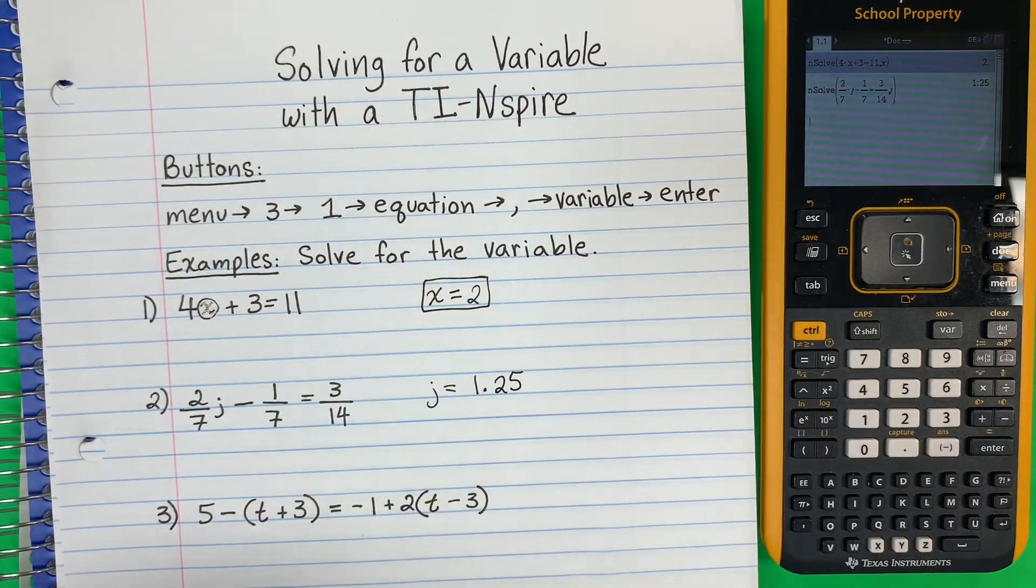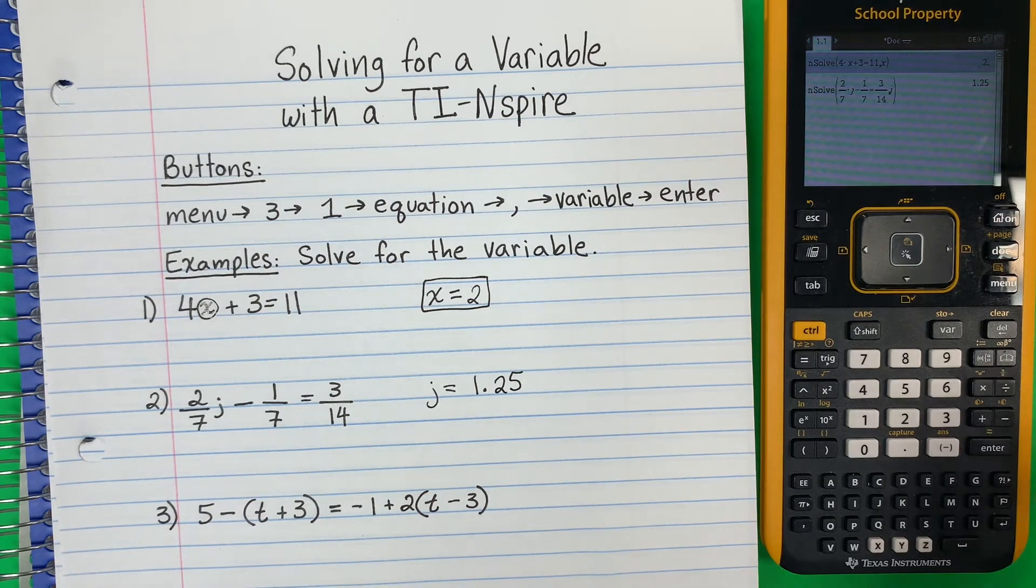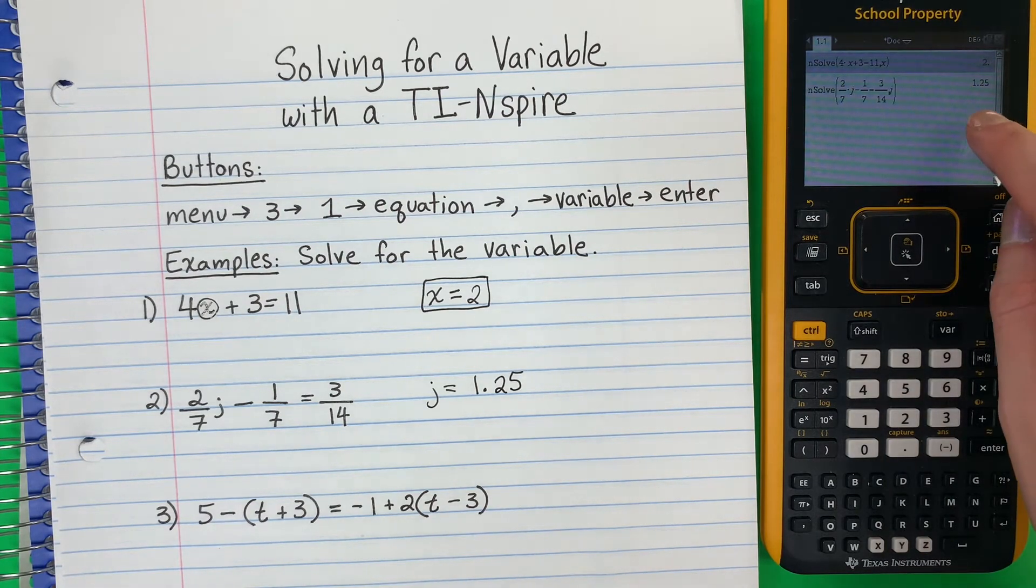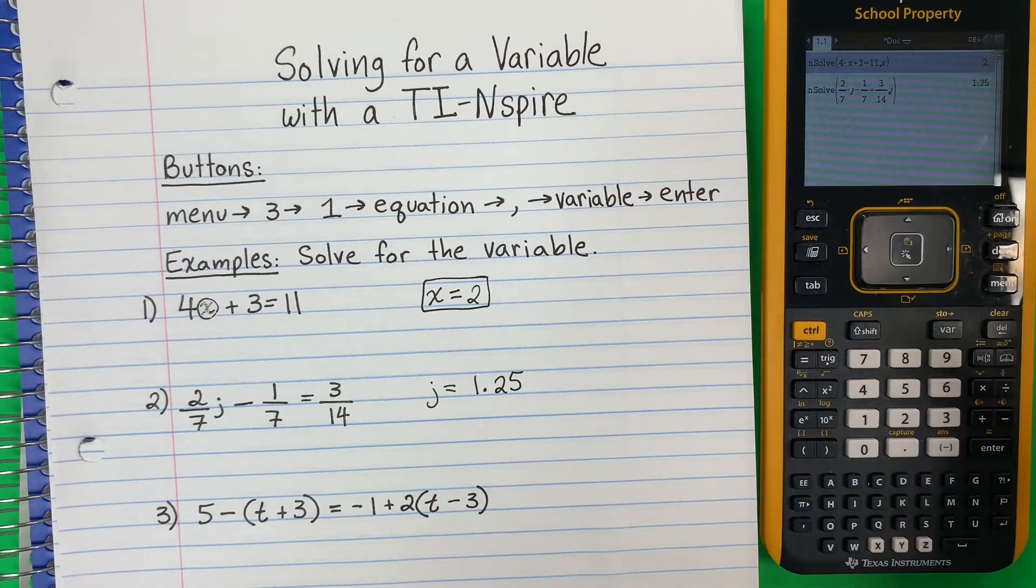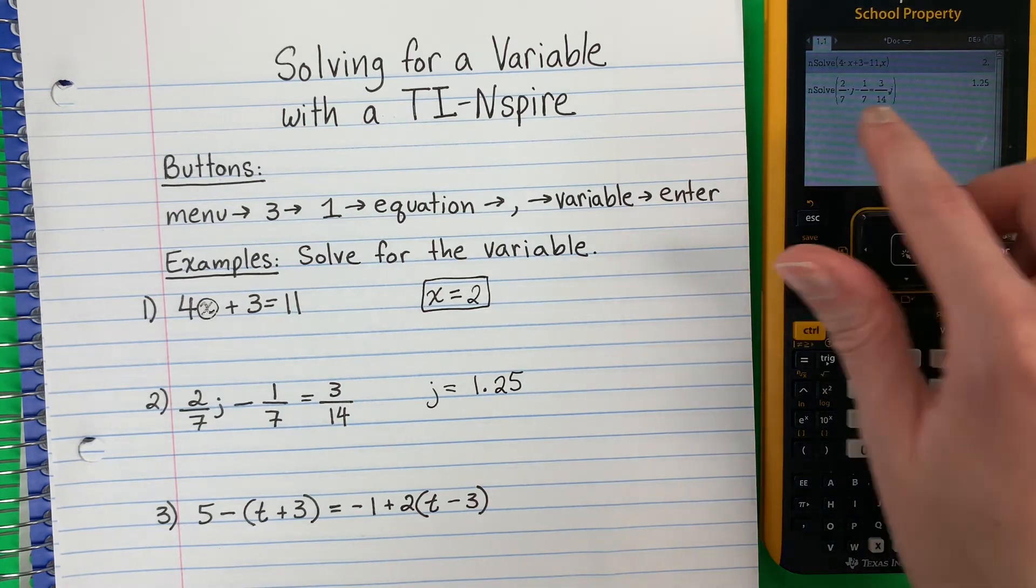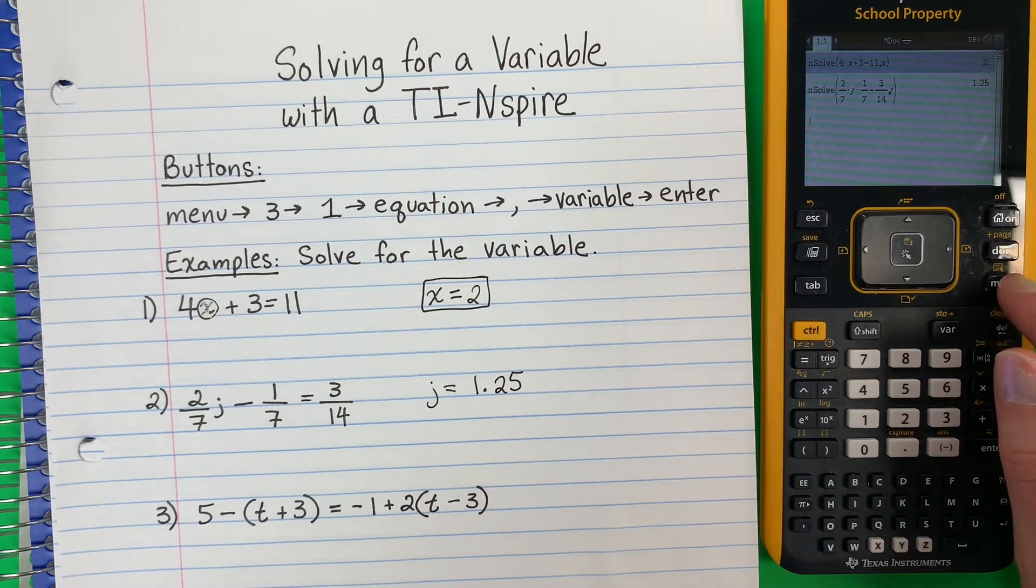Now, if I want a fraction, si quiero un fracción, because this is decimal, este es decimal, with the point, con el punto. If I want fraction, like the original question, I'm going to go ahead and do menu.